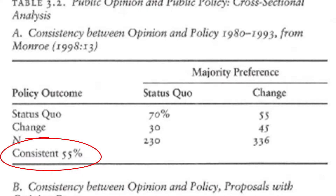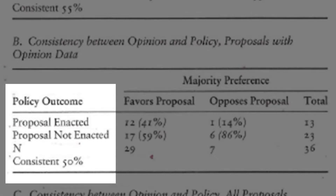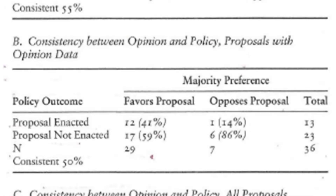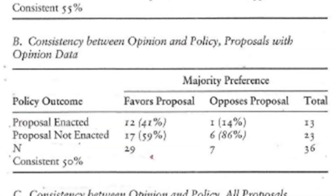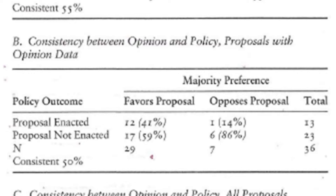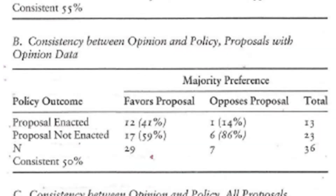Now let's look at Burstein's results, but only for proposals with opinion data. On the left we see proposals enacted and proposals not enacted. Burstein finds something like the opposite of Monroe for one measure: when the majority of preferences oppose the proposal, 86 percent of the time the proposal is not enacted. When the public favors the proposal, it is enacted 41 percent of the time. Overall, Burstein finds consistency 50 percent of the time — similar to Monroe's 55 percent.